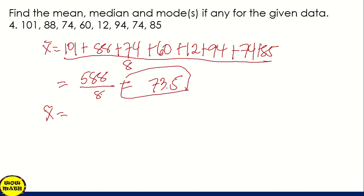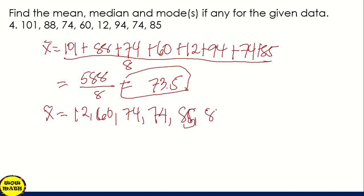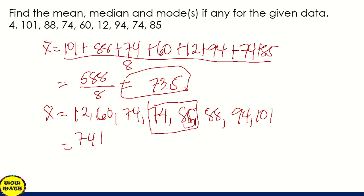Next is the median. We arrange from lowest to highest: 12, 60, 74, 74, 85, 88, 94, and 101. Since this is an even number of data, we have two middle values: 74 and 85. So we add 74 plus 85, which is 159, then divide by 2. The answer is 79.5, so 79.5 is the median.